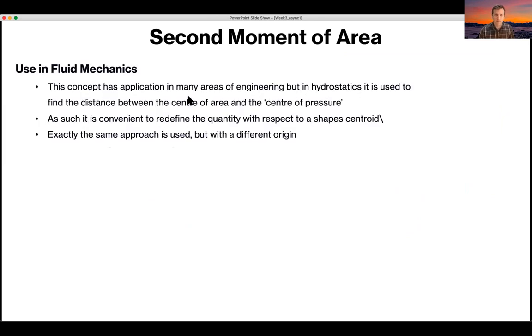So in fluid mechanics, we use this often to, as you're going to see shortly, we use this often to help us understand the difference between the center of gravity or the centroid and the center of pressure of the submerged object. There are two different things, and the distance can be identified by calculating the second moment of area of that shape. And that's why we're reviewing it now.